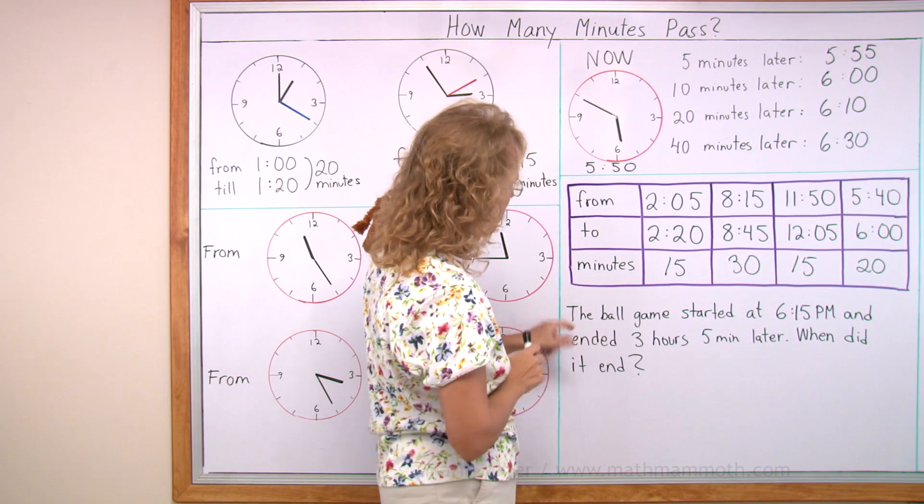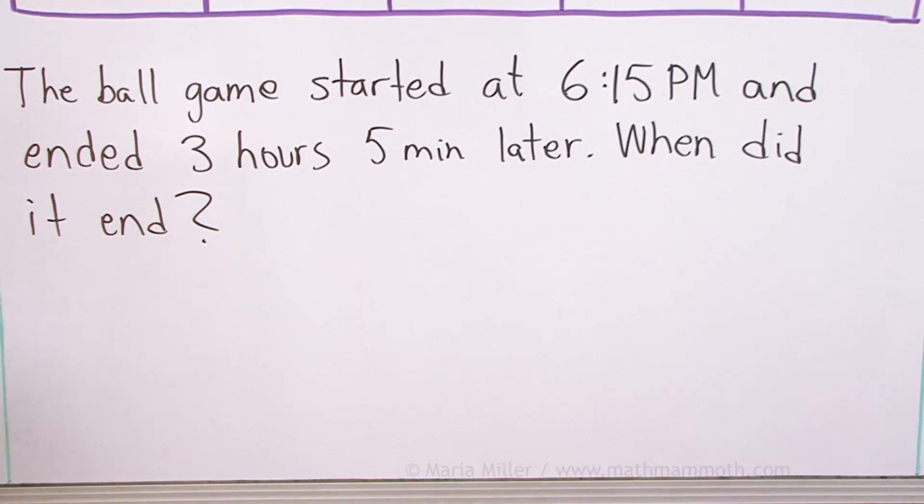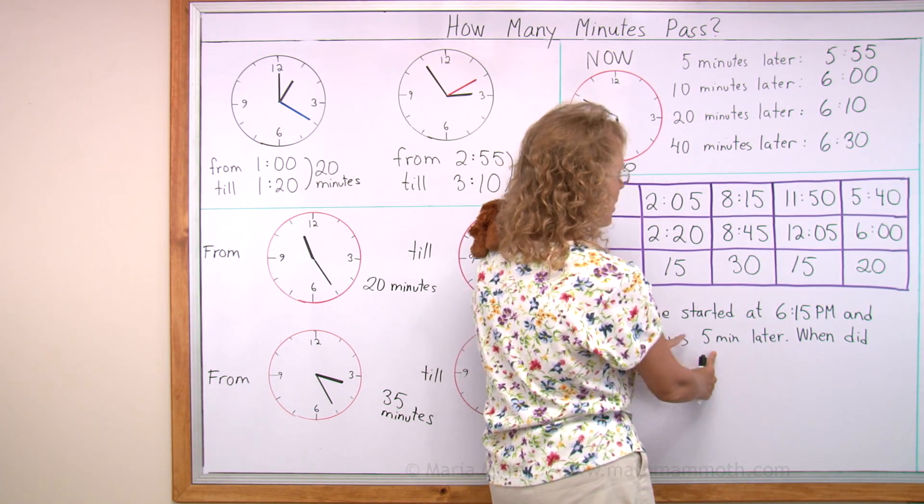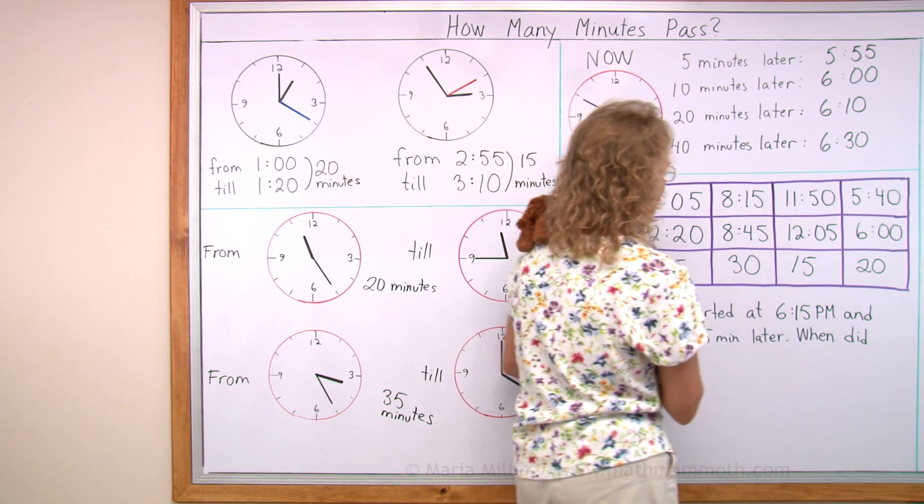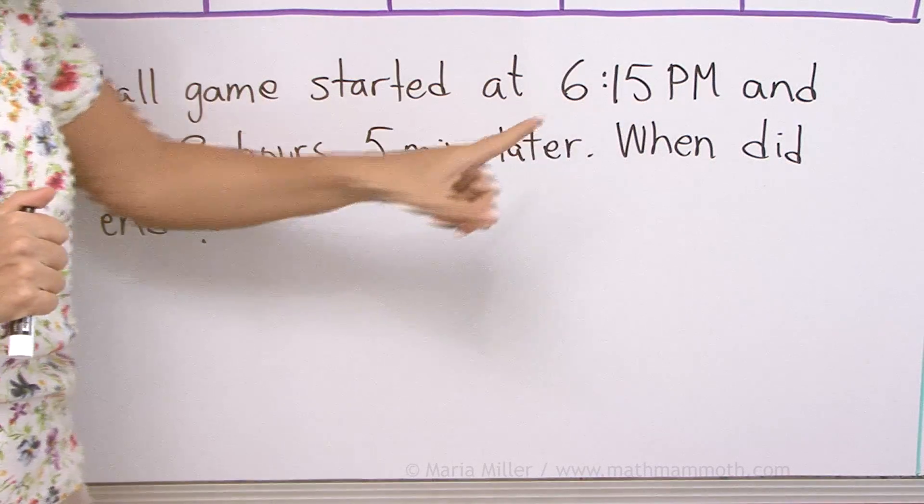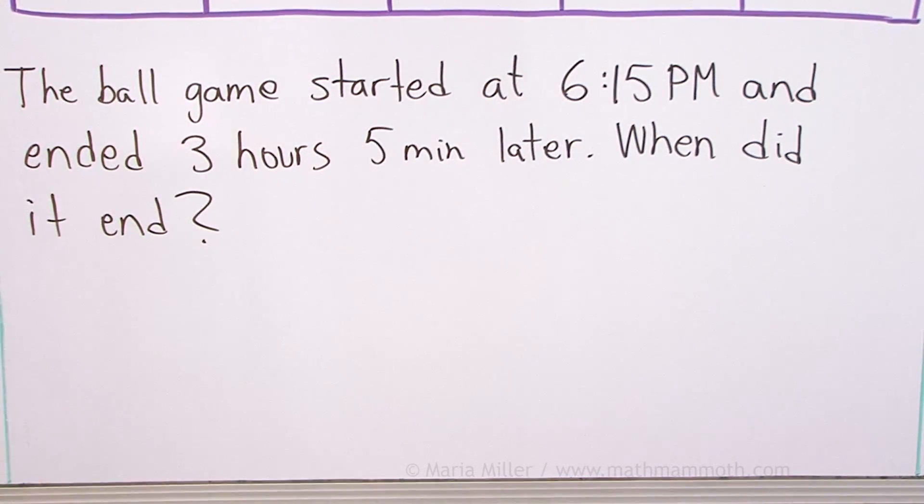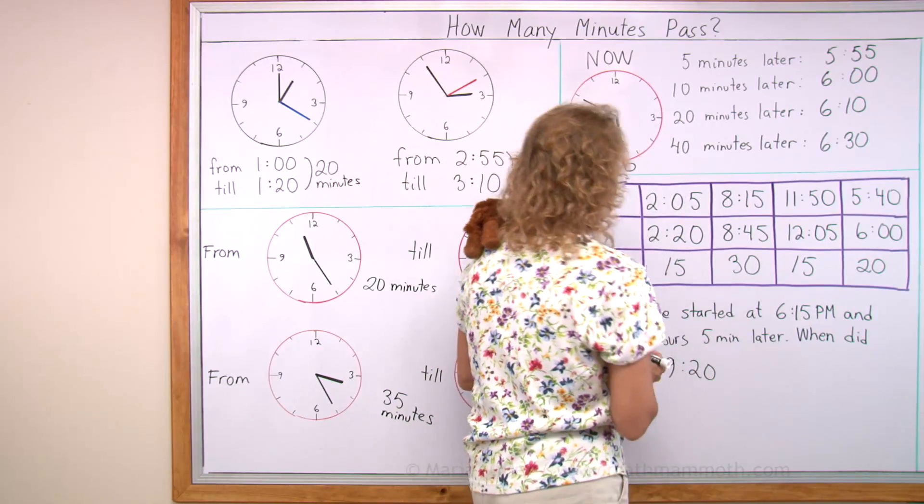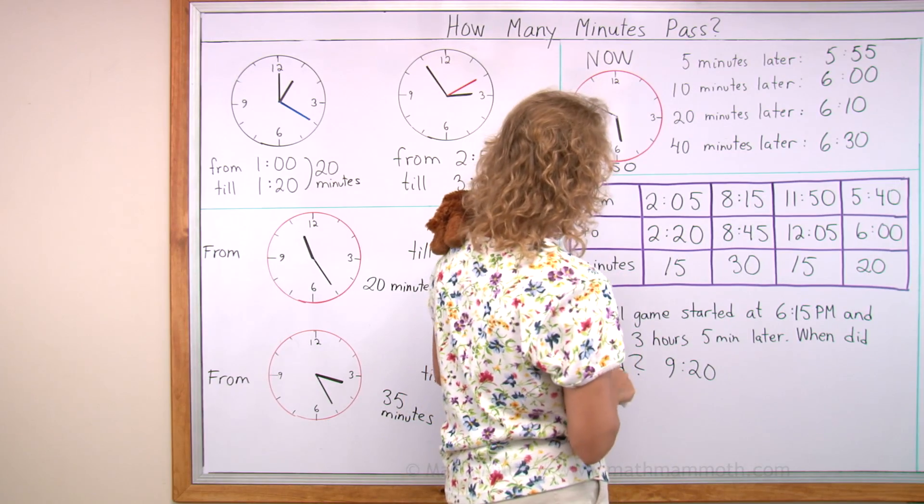The ball game started at 6:15 PM and ended 3 hours, 5 minutes later. So when did it end? At what time did it end? That was a long game. Now, 3 hours, 5 minutes. And it started at 6 hours, 15 minutes. So all we really need to do is add. Add the hours, 6 hours and 3 hours, 9 hours. And then the minutes, 15 and 5. So we should get 9 hours and then 20 minutes. So it ended at 9:20.